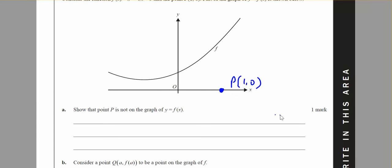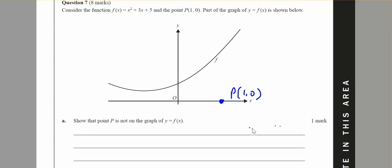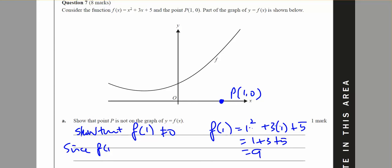Show that P is not on the graph. Well I can see it's not on the graph. So I want to show that f of 1 does not equal 0. And f of 1 equals 1 squared plus 3 times 1 plus 5, which is 1 plus 3 plus 5, which is 9. So since f of 1 equals 9, P is not on f of x.